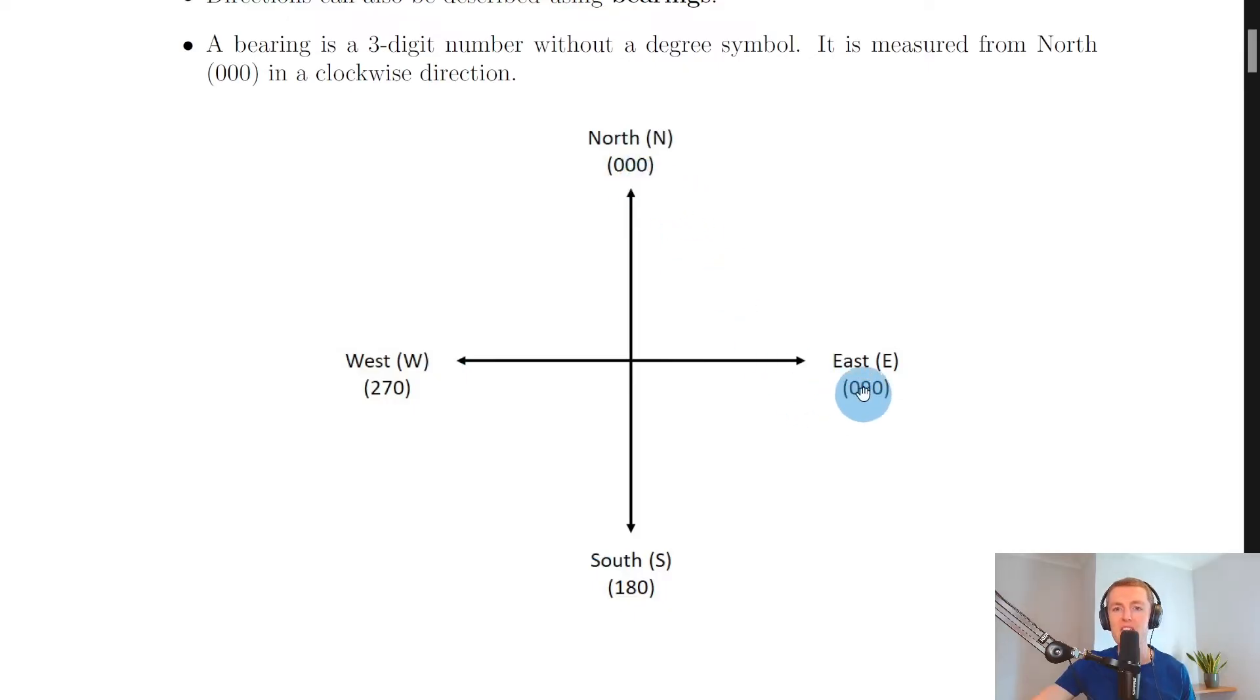We say that north has a bearing of 000, and then we move around 90 degrees to here, which means our bearing is going to be 090. Remember, we don't need the degree sign for a bearing.